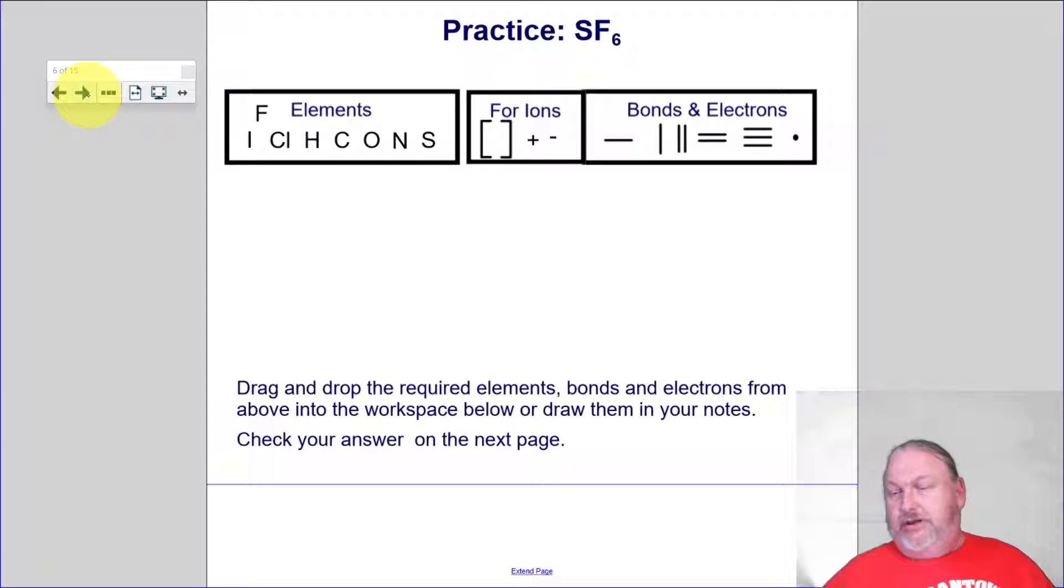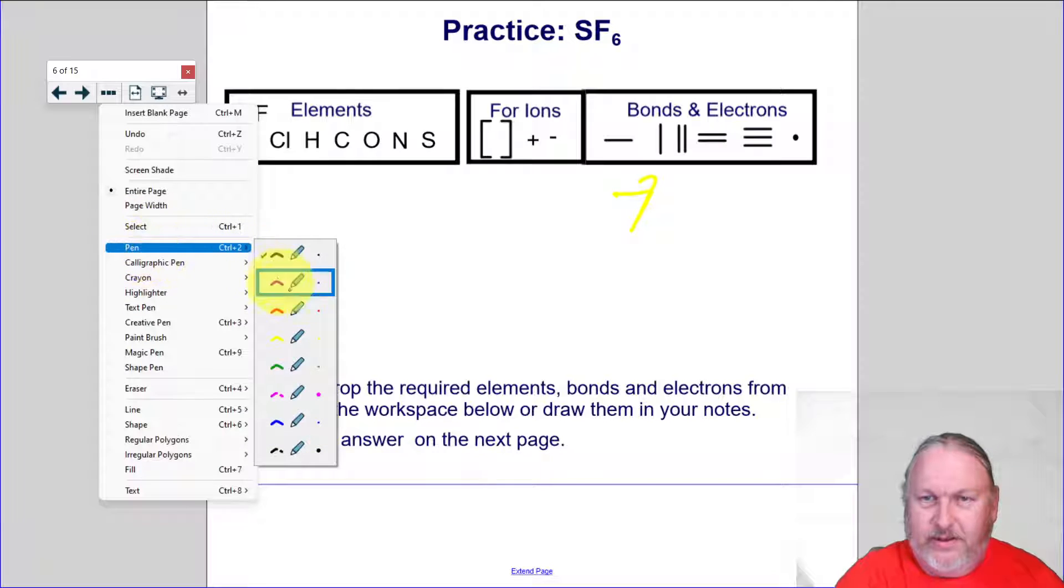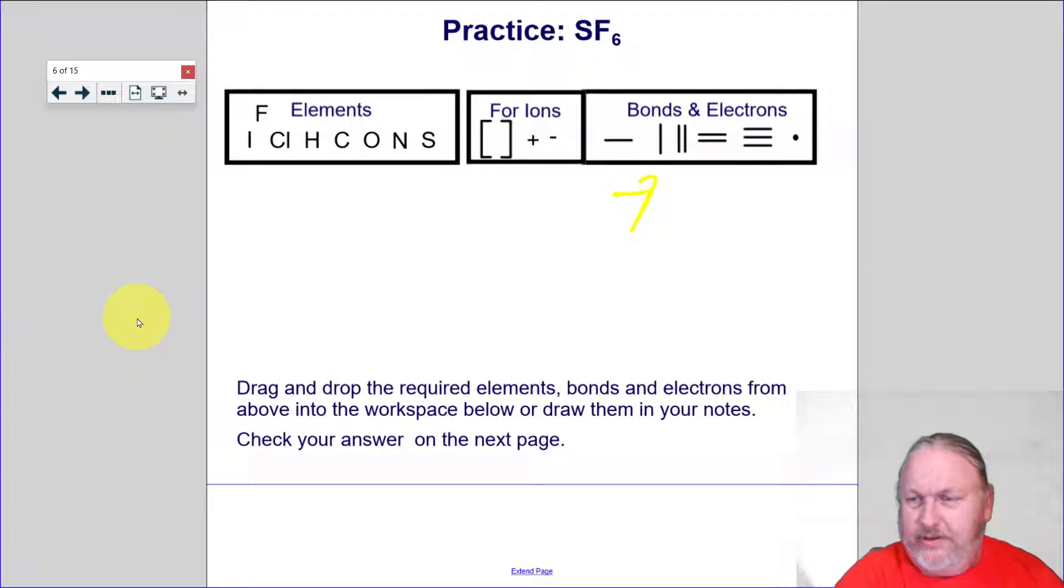So let's look at SF6, sulfur hexafluoride. So we would expect sulfur has six valence electrons. And then fluorine has seven. You've got six fluorines. So that's seven times six. Oh yeah, I had the wrong draw on. So let's go to our pen. And let's pick, let's go to the red. So seven times six is 42.